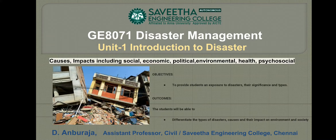Hello everyone. Now we are going to discuss about causes and impacts including social, economic, political, environmental, health and psychological. Unit 1: Introduction to Disaster. The subject name is Disaster Management. This unit objective is to provide students an exposure to disaster, their significance and types. The unit outcome is: we will be able to differentiate the types of disaster, causes and their impact on environment and society.